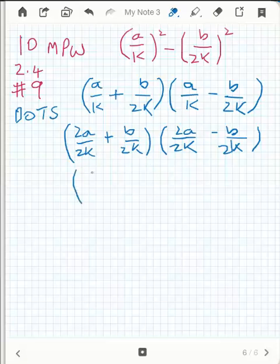So this bracket here is 2a plus b, all over 2k. And this factor in here is 2a minus b, all over 2k.